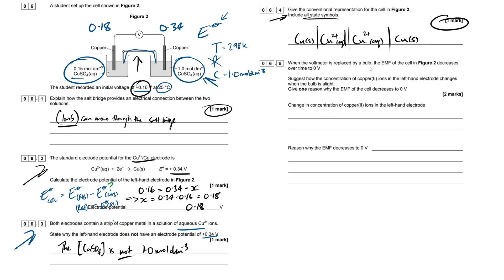All right, so when the volt meter is replaced by a bulb, the EMF of the cell in figure 2, yeah remember I said you may see it written as EMF. That's exactly the same thing. It decreases over time to 0 volts. Suggests how the concentration of copper 2 ions in the left-hand electrode changes when the bulb is alight. Give one reason why the EMF of the cell decreases to 0. So we have to answer both stages of this question for our two marks. So then, this volt meter here has an incredibly high resistance, so it essentially doesn't let the ions flow. But when we remove this and we replace it with a bulb, we're going to get the current flowing and the ions moving through solution.